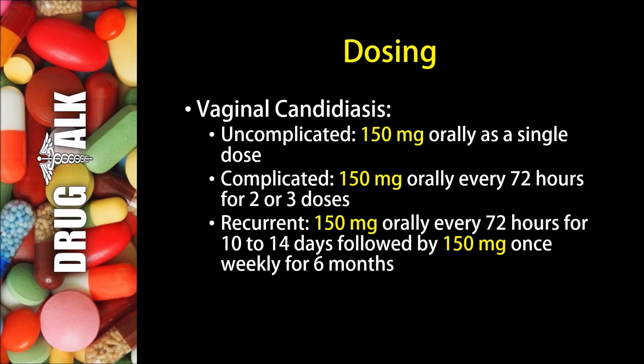A note about dosing with Fluconazole. In the treatment of vaginal candidiasis, or a yeast infection, if it's uncomplicated, we would typically give 150 mg orally as a single dose. If it was complicated, a patient may receive 150 mg orally every 72 hours for two or three doses. If it was recurrent, a patient may receive 150 mg orally every 72 hours for 10 to 14 days, followed by 150 mg once weekly for six months.